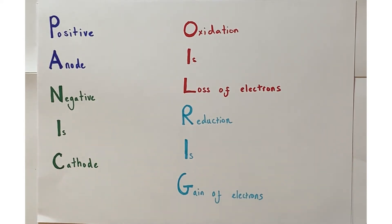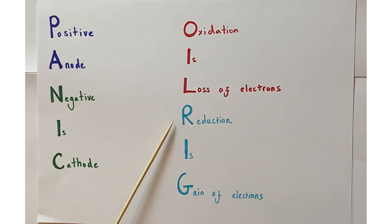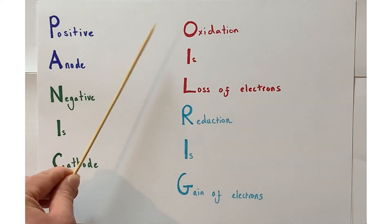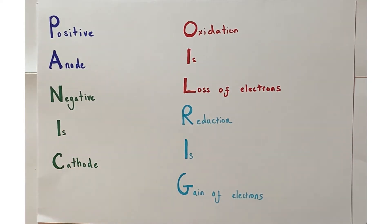The second mnemonic is OIL RIG. It reminds us that oxidation is the loss of electrons from a chemical species across the course of a reaction, whilst reduction is the gain of electrons by a chemical species. So we remember 'Don't Panic' and 'OIL RIG' — these will really help when dealing with electrolysis problems.